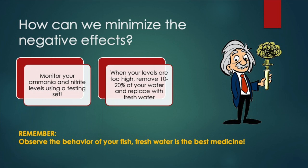Now that we have a basic understanding of the cycle, can we do something to minimize the effects of the transformation processes? The answer is a simple yes, we can. First of all, we can get a simple test set that measures the amount of ammonium and nitrite in the water — these are toxic to fish and need to be monitored at all times. If you measure a concentration that is a bit too high, just refresh some water. This way, you dilute the concentration, giving your biological system time to cope with the demand and to grow an amount of bacteria to neutralize it.